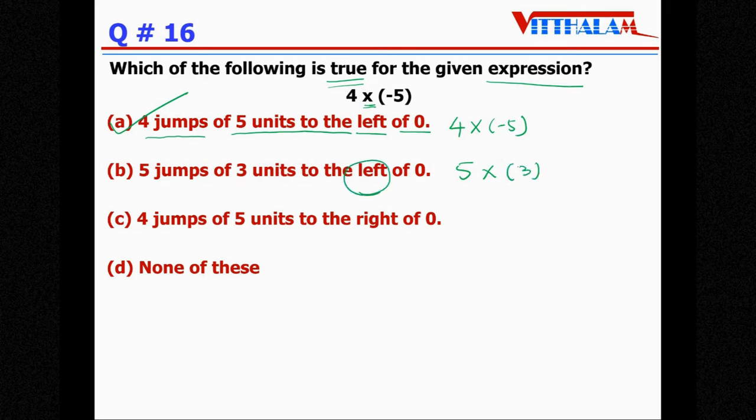To the left, left means it's minus from 0, so 5 multiplied by minus 3, it is 4 into minus 5 so b is not the answer. Go for c, 4 jumps of 5 units to the right, so it's a positive sign and the answer will be 20. Here answer will be minus 20 so it will be left of the 0, this is right of the 0, therefore this is not the answer. None of these, already we got the answer a.